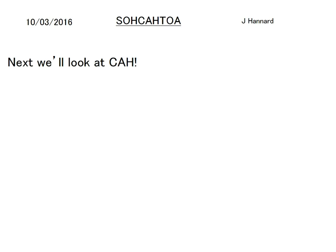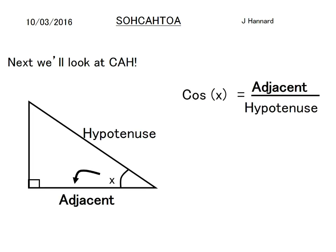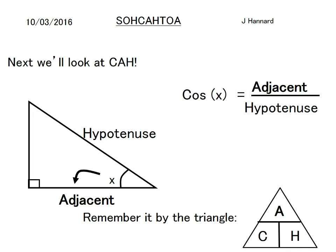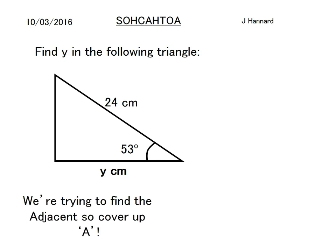Next we'll look at CAH. We've got the adjacent and the hypotenuse — cosine equals adjacent over hypotenuse. Remember it by the triangle, same principle as before. Let's try an example: find y in the following triangle. We're trying to find the adjacent, so we'd cover up adjacent — adjacent equals cos × hypotenuse, which is cos 53° × 24, so adjacent equals 14.4 cm.